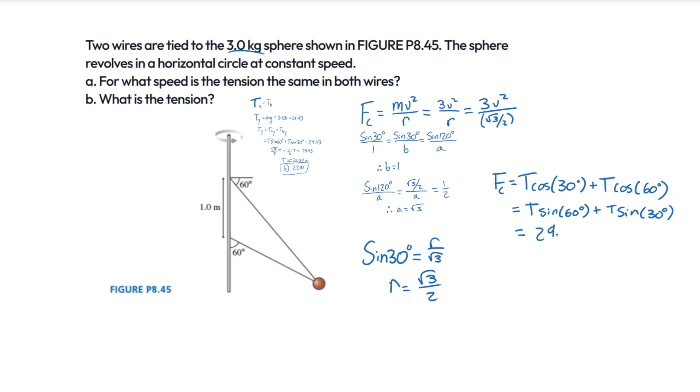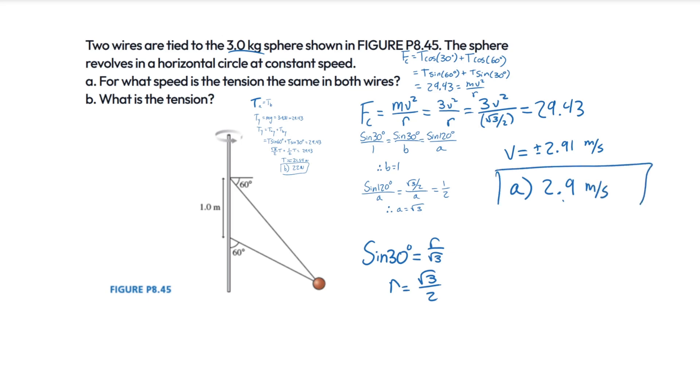So 29.43 is equal to mv squared over r. If we bring that up right here, we have this all equal to 29.43. And we can use this to solve for v. I'm going to bring this up there. If we solve this, we are going to get v equal to plus or minus 2.91 roughly. And we're looking for speed, so it's just the magnitude of this. Our answer for A is going to be 2.9 meters per second. That is with two significant figures.